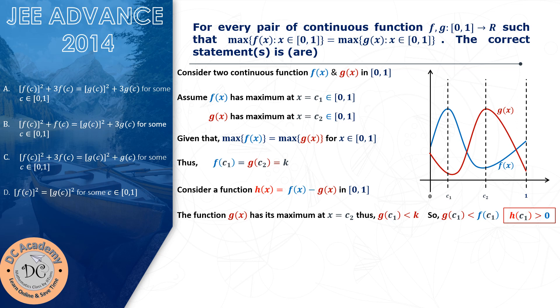Let's calculate h(c1) separately. h(c1) = f(c1) − g(c1) = k − g(c1). Now g(c1) must be less than k because the maximum of g occurs only at c2. So any other value must be less than the maximum value. Therefore k − g(c1) > 0, and we obtain that h(c1) > 0.